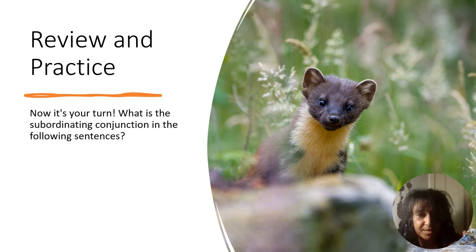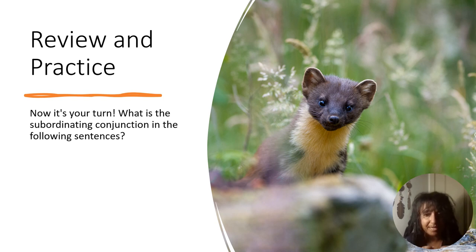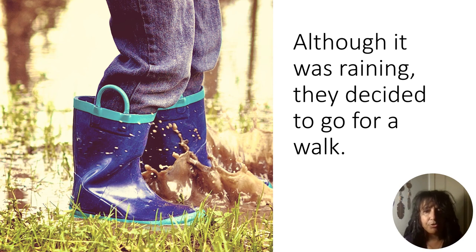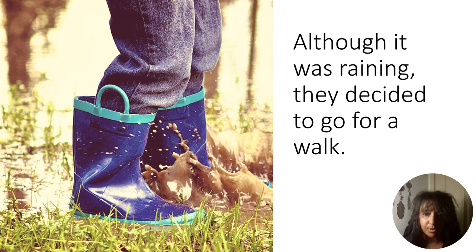We're going to look at these sentences, and I want you to tell me what the subordinating conjunction is. I also want you to pay attention to whether or not a comma is used. Ready? 'Although it was raining, they decided to go for a walk.' In that sentence, what is the conjunction, and is it a subordinating conjunction or a coordinating conjunction?